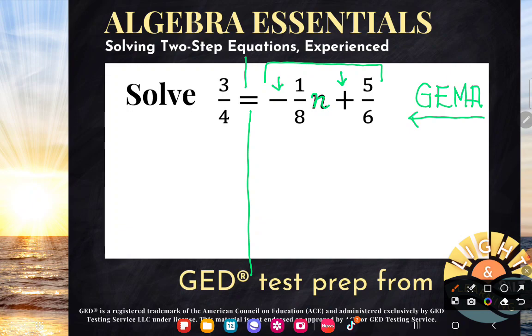So I agree with you that 5/6 is adding with n because see how that plus sign is between n and 5/6? But 1/8 is not subtracting with n. Look at how this number, this whole thing, is shoved up against n with nothing between the number and n. Those two things are shoved together. They're actually multiplying.